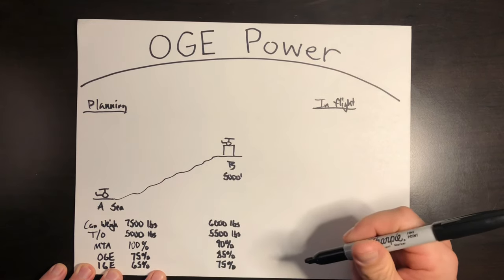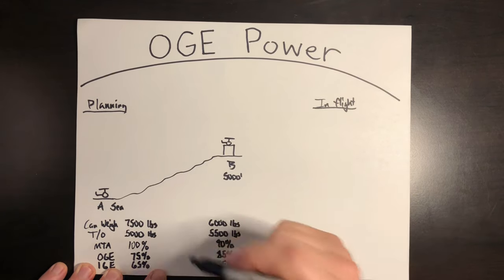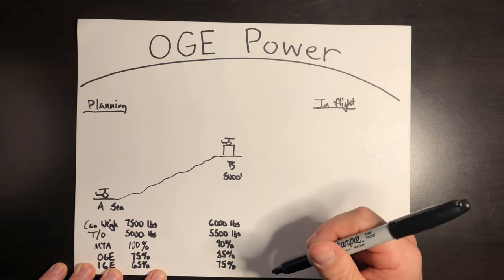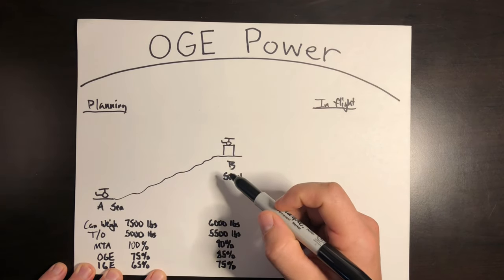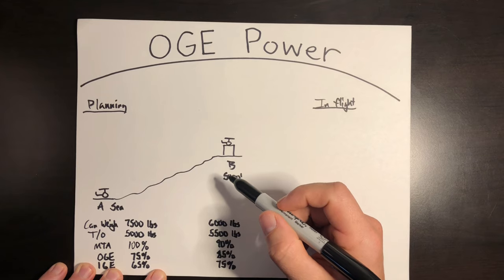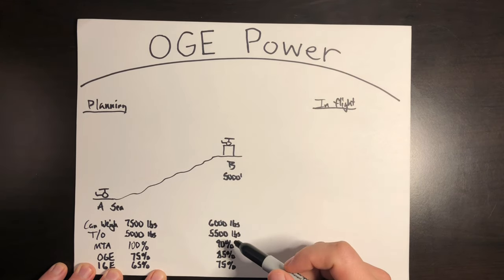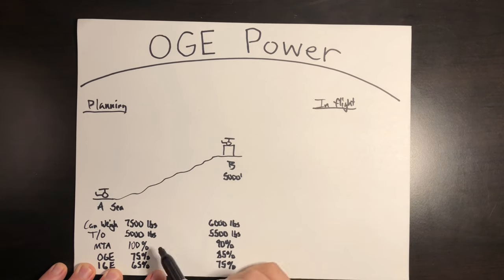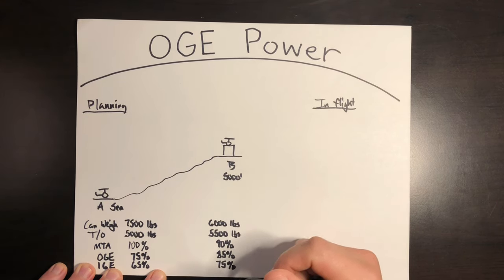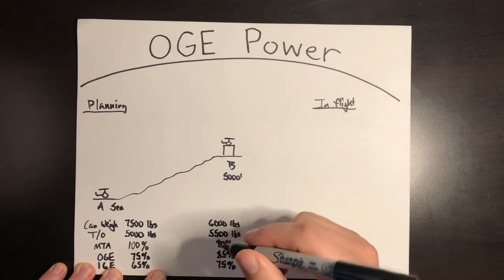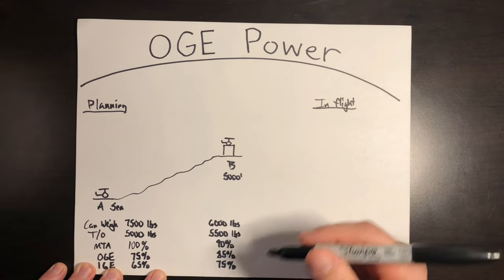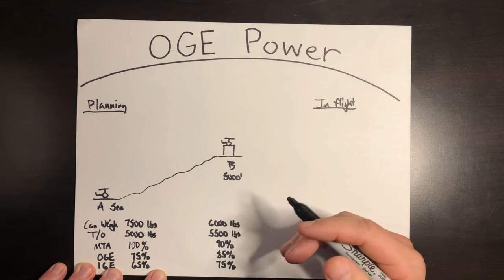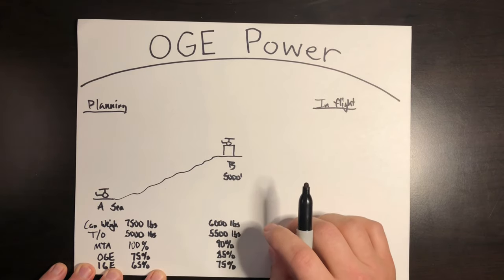So one last reason this is useful is that you can adjust these numbers based on contingencies. Let's say as I arrive at location B, they ask if I can carry 800 pounds instead of the initial 500 that they told me. Well, looking at the numbers, I can bring up to say 1000 pounds of cargo, 5000 plus 1000 pounds or 500 more than I initially planned and still have my OGE power. So I can say either yes or no based on the power. If they say, can you take 1300 pounds of cargo? Probably not if I need OGE power for the takeoff, but I can look at that in the mission analysis.